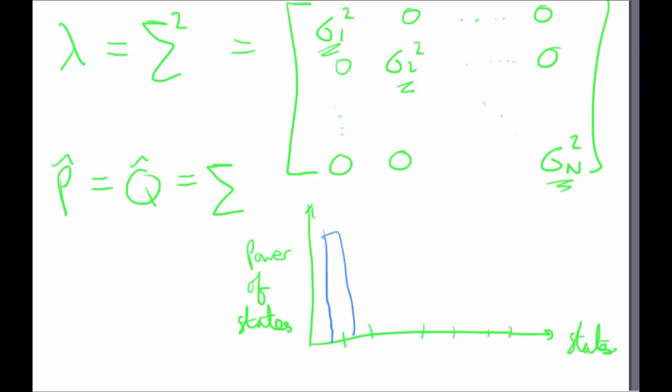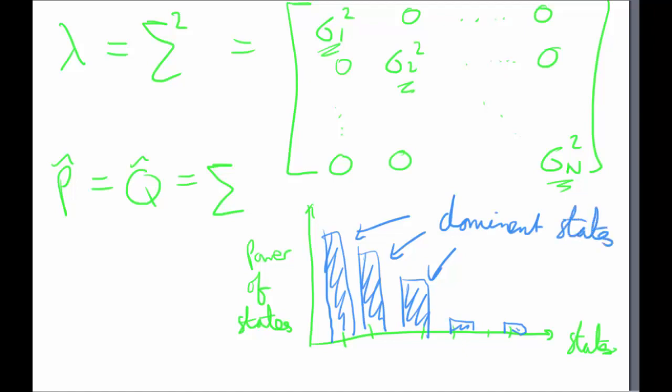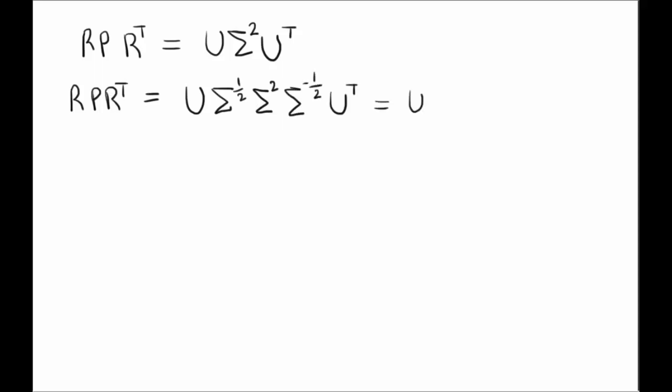So when you plot these eigenvalues, you'll get the power of the states and the state values on the x axis. You can do this using MATLAB or you can just do this using paper, and you'll get graphs like this, where you'll get dominant states here which will get the majority of the power, and then you'll get insignificant states right down here in the red arrows. So the first few states here will represent about 95% of the entire system, so you can really narrow the entire system down.